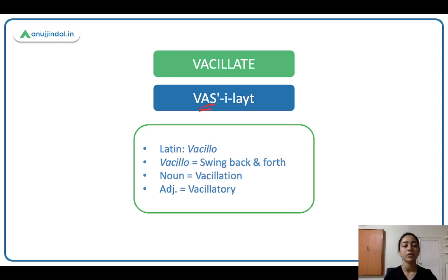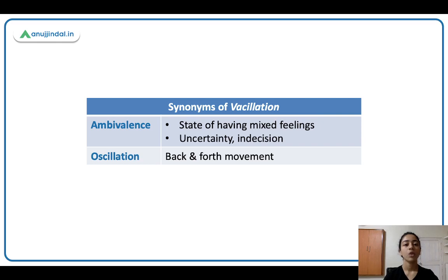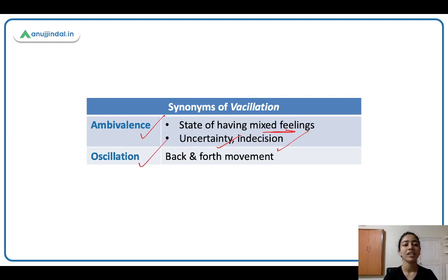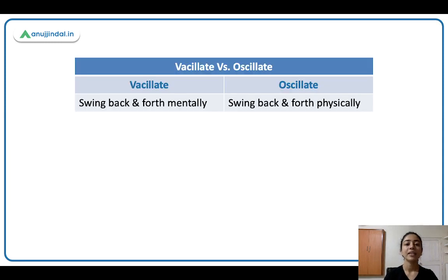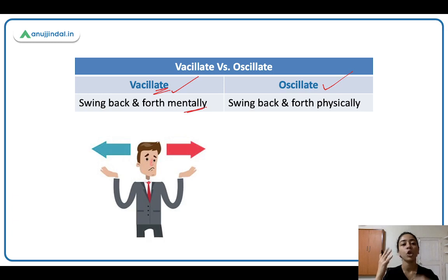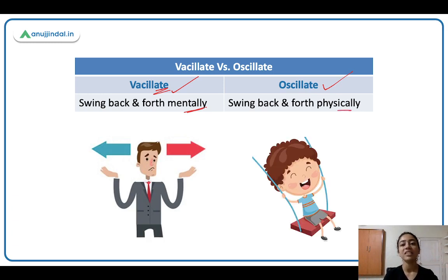Vacillate — note the pronunciation: vacillate. It comes from Latin 'vacillo,' which means swing back and forth, aage peeche jhulna. The noun is vacillation; adjective is vacillatory. Synonyms of vacillation: ambivalence — a state of having mixed feelings, not able to make a decision, yes or no, not sure what to do; uncertainty; indecision. And oscillation — back and forth movement, jhulna. The difference: vacillate is swing back and forth mentally — not being able to make a decision, do choices mein confused ho. Oscillate means swing back and forth physically — jaisi park mein swing pe baith ke aage peeche jhul raha ho.